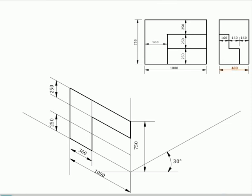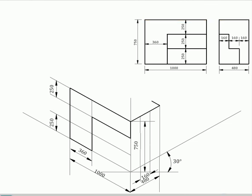From all the appropriate corners, draw projectors parallel to the third isometric axis representing the visible edges. On these projectors, set the width of the solid and complete the view.